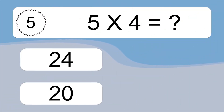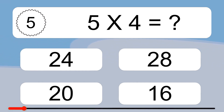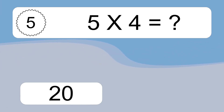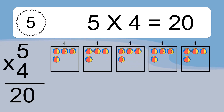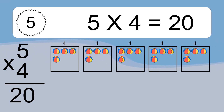5 times 4 equals what? 5 times 4 equals 20. We have 5 boxes, and each box has 4 colorful balls inside. If you count all the balls in all the boxes together, you will have 5 times 4 balls. This equals 20 balls.